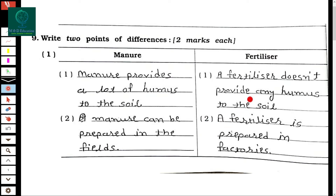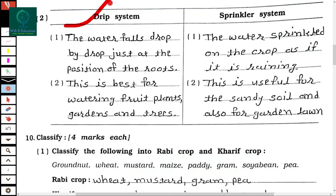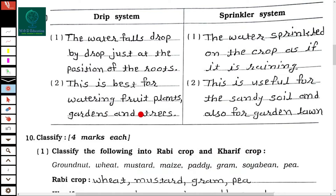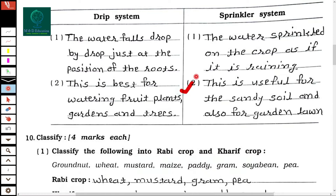The second comparison in question 9 is drip irrigation and sprinkler. For drip irrigation, the first point is the water falls drop by drop just at the position of the roots. The second point is this is best for watering fruit plants, gardens and trees. For the sprinkler system, the first point is the water is sprinkled on the crop as if it is raining. The second point is this is useful for sandy soil and also for garden lawns.